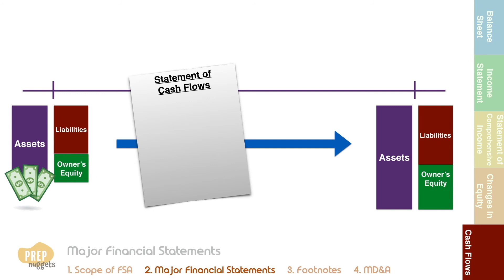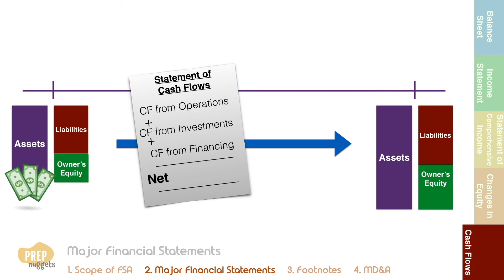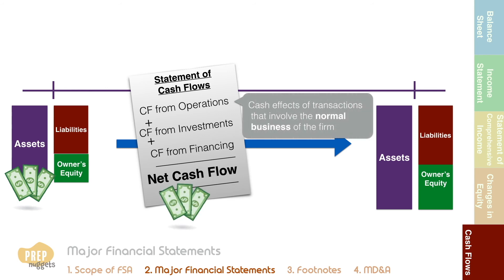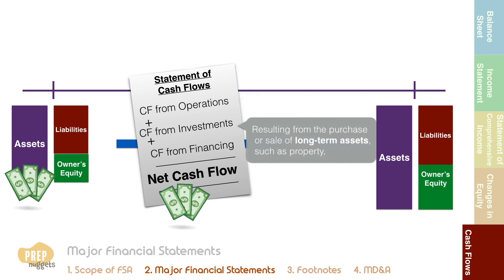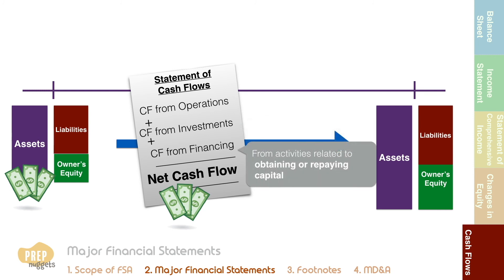The cash flow statement is segregated into three sections: operating, investing, and financing cash flows. Operating cash flows include the cash effects of transactions involving the normal business of the firm. Investing cash flows result from the purchase or sale of long-term assets such as property, equipment, subsidiaries, or investment assets. Financing cash flows are those from activities related to obtaining or repaying capital to be used in the business.